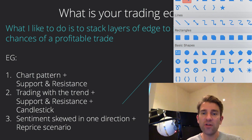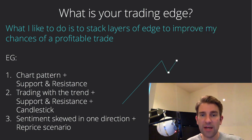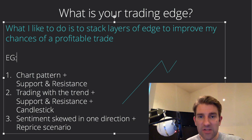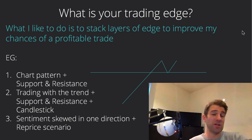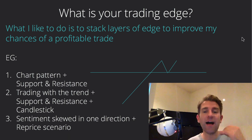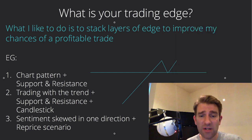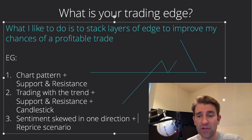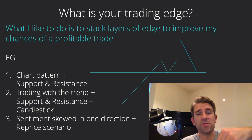Let's say the trend is up and now we come down and find a little bit of support — support that has become support because it was resistance before, or whatever it may be. The value of that is far better in my eyes than if we're trading against the trend. In other words, if we're in a downtrend and we're coming down to support in a heavily aggressive bear market, that's a very different situation.